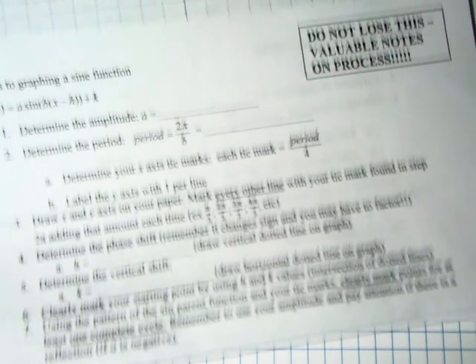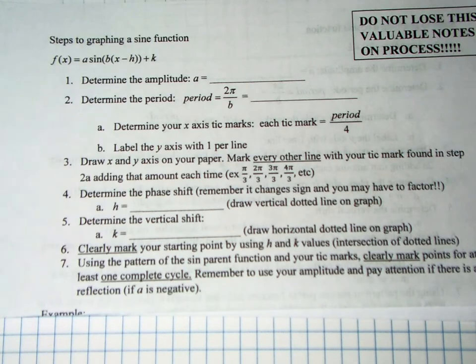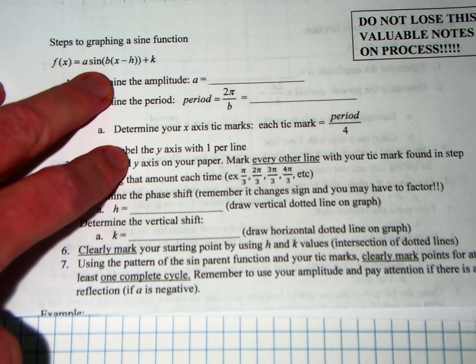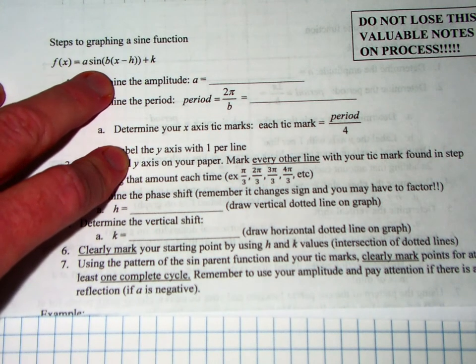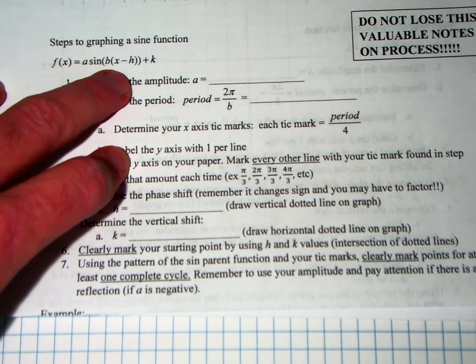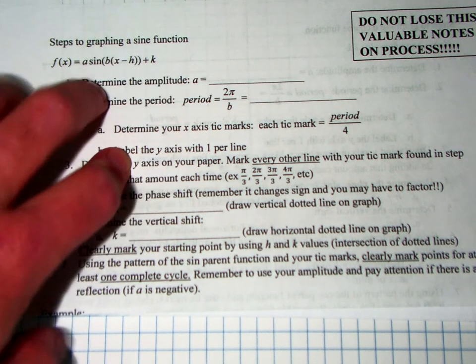If you need to pause this for a second you can certainly do that, but at the top of the page here you see the basic format: A sine of b x minus h plus k, where the a is the amplitude, the b value deals with the period, h is the phase shift or horizontal shift, and k is the vertical shift.